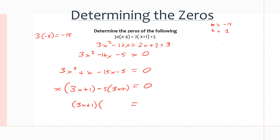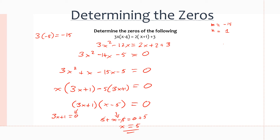We can factor out (3x plus 1) because each term has a (3x plus 1), so factoring it outside the brackets leaves (x minus 5) inside. To find our zeros we figure out which x-values make the equation equal zero. If x minus 5 equals zero, adding 5 to each side gives x equals 5 — that's one zero. To make (3x plus 1) equal zero, subtracting 1 gives 3x equals negative 1, and dividing by 3 gives x equals negative 1 over 3.